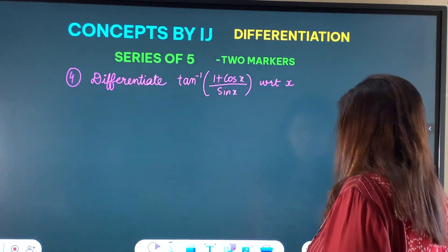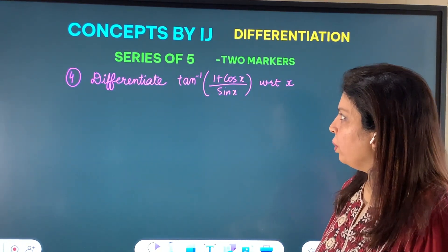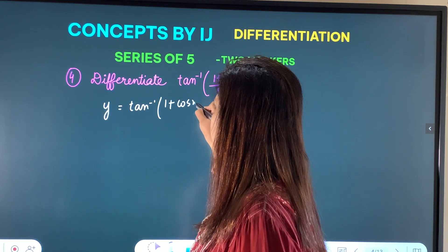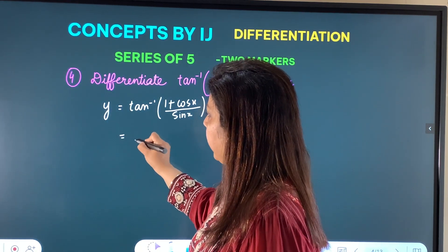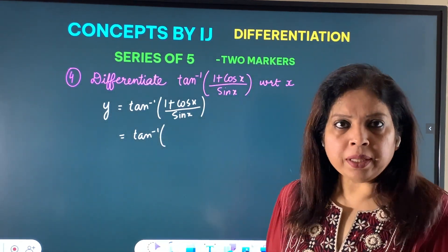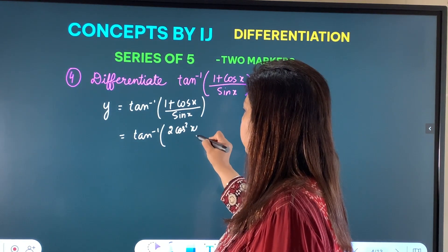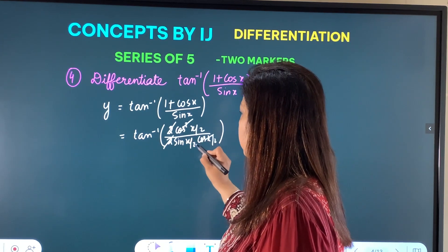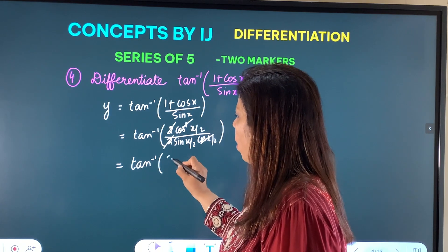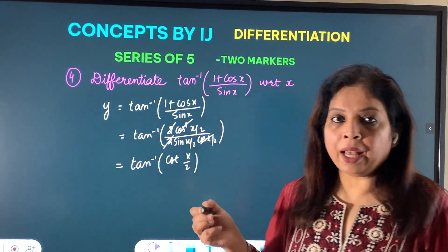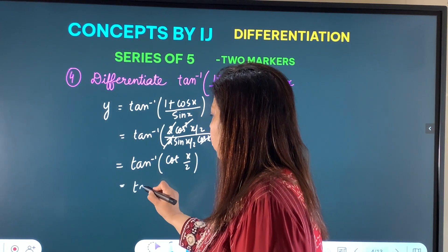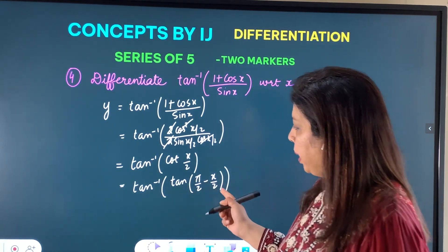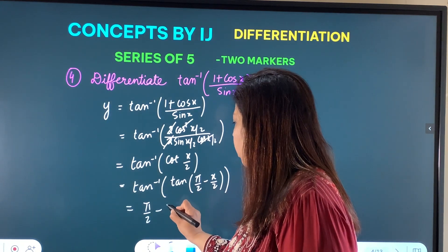Question 4: differentiate tan⁻¹((1+cosx)/sinx) with respect to x. Apply half-angle formulae to simplify the expression inside. 1+cosx = 2cos²(x/2), and sinx = 2sin(x/2)cos(x/2). The factor 2 and one cos(x/2) cancel, leaving tan⁻¹(cos(x/2)/sin(x/2)) = tan⁻¹(cot(x/2)). Since tan⁻¹(tan θ) = θ, we write cot(x/2) as tan(π/2 − x/2), giving y = π/2 − x/2.